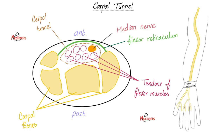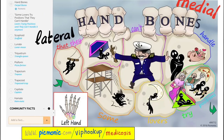Let's memorize the eight carpal bones. The classic mnemonic goes like this: 'Some lovers try positions that they can't handle.' So this is the left hand. Lateral is here, near the thumb. Medial is here, near the pinky or the little finger. S is the scaphoid bone. Lovers — the lunate. Tri — triquetrum. Positions — the pisiform.